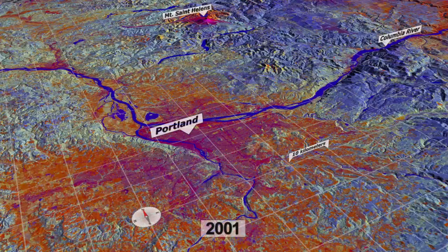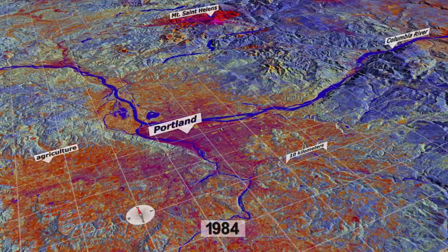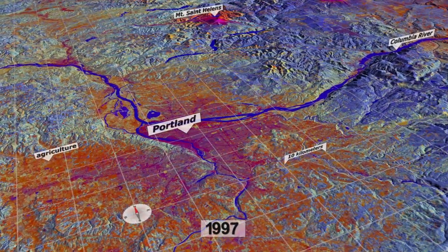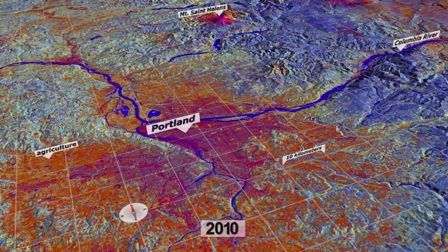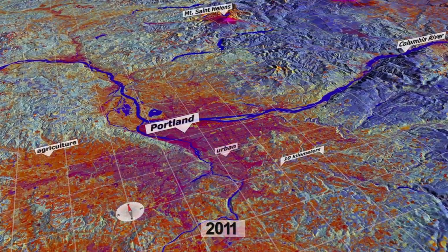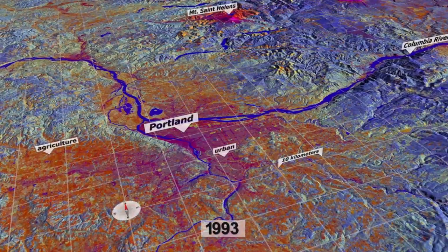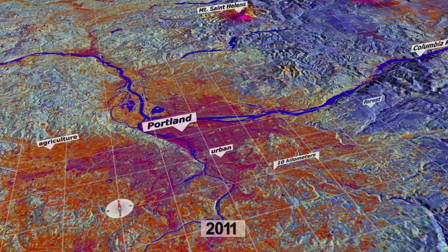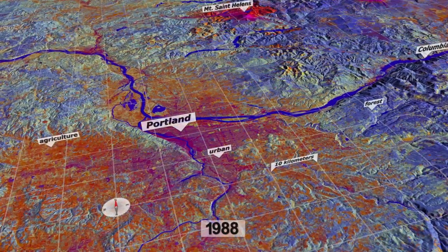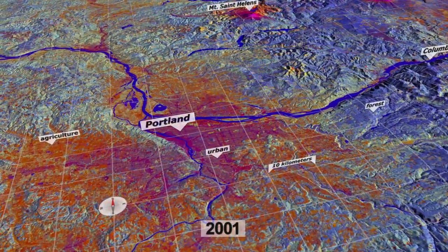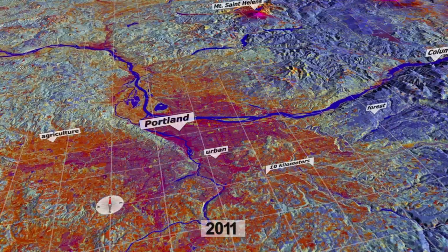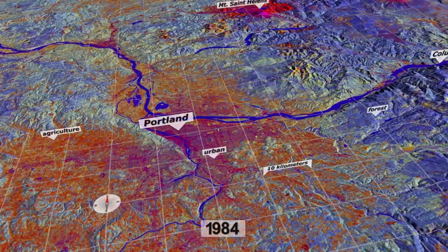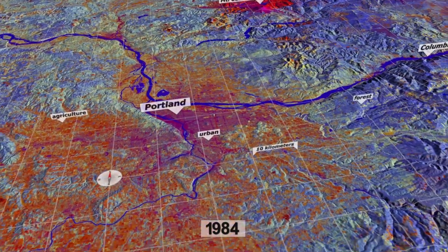When we're looking at how processes affect landscapes, you need to understand how the processes unfold over time. Hindsight's 20-20. Landsat gives you that hindsight.